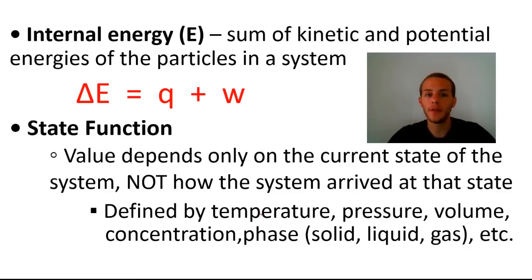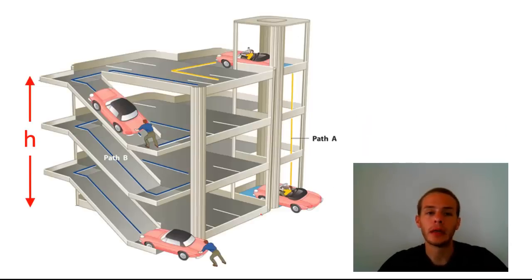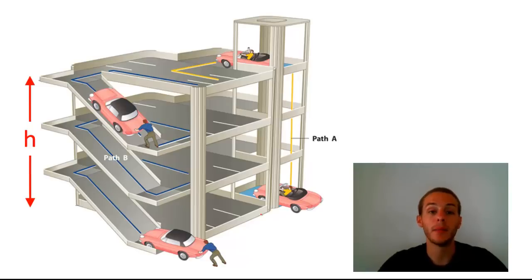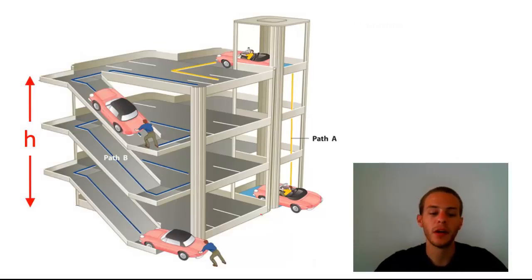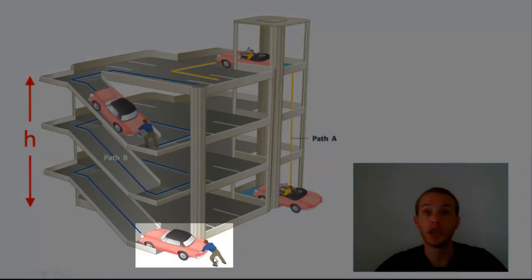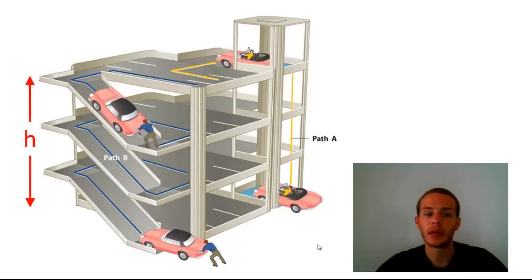The nice thing about state functions is that doing calculations with them is actually very easy. It's much more difficult when you have properties whose values depend on the path, and those are appropriately called path functions. We can get an idea of a state function versus a path function with a parking garage analogy. A state function would be like the height of a parking garage — the height does not depend on how you climb the garage or how you get from the bottom to the top.